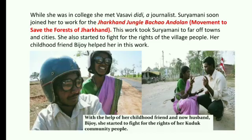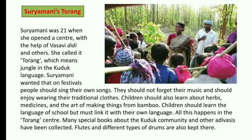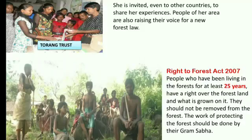While she was in college, she met Vasavi Didi, a journalist. Suryamani soon joined her to work for the Jharkhand Jungle Bachao Andolan — a movement to save the forests of Jharkhand. This work took Suryamani to far-off towns and cities, where she also tried to fight for the rights of village people. Her childhood friend and later husband, Vijoy, helped her in this work, and together they fought for the rights of their Kuduk community. At 21, Suryamani opened a centre called Torang with the help of Vasavi Didi. She is now invited to other countries to share her experiences, and people in her area are raising their voices for a new forest law.